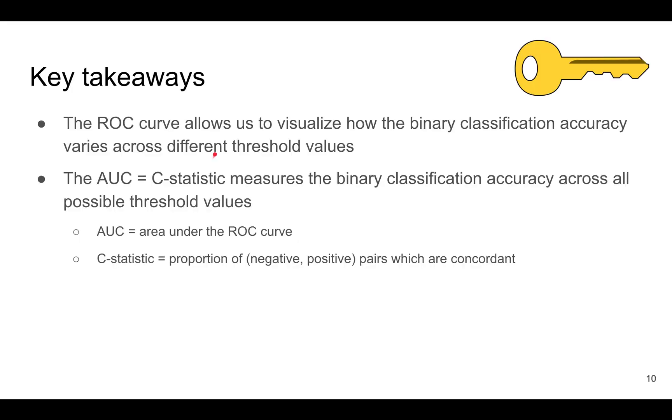All right, so to conclude, the ROC curve allows us to visualize how well a binary classification algorithm performs and how the accuracy changes as you vary the threshold values. The AUC is equal to the C statistic, and it measures how well the accuracy of the binary classification algorithm across all possible threshold values. And the AUC is basically the area under the ROC curve, whereas the C statistic is defined as the proportion of negative-positive pairs which are concordant. All right, so that's all for this video lecture. See you next time. Bye!